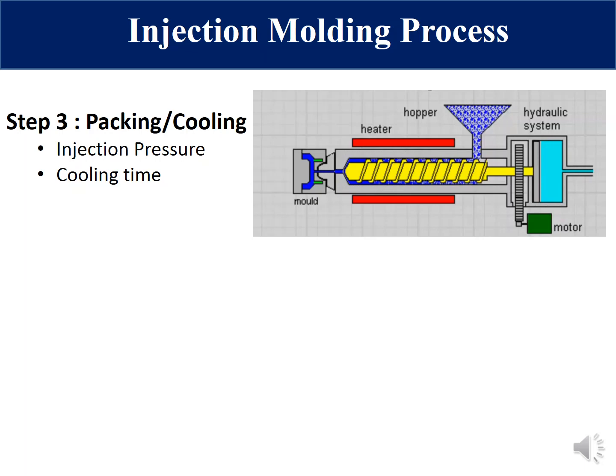Injection pressure is decided based on the maximum clamping pressure of the injection molding machine. Similarly, cooling time is an optimized value balancing injection molding efficiency and product quality. A higher mold temperature leads to products with better strength and gloss, but requires longer cooling time. Cooling time typically ranges from 5 seconds to 20 seconds, depending on product quality requirements.